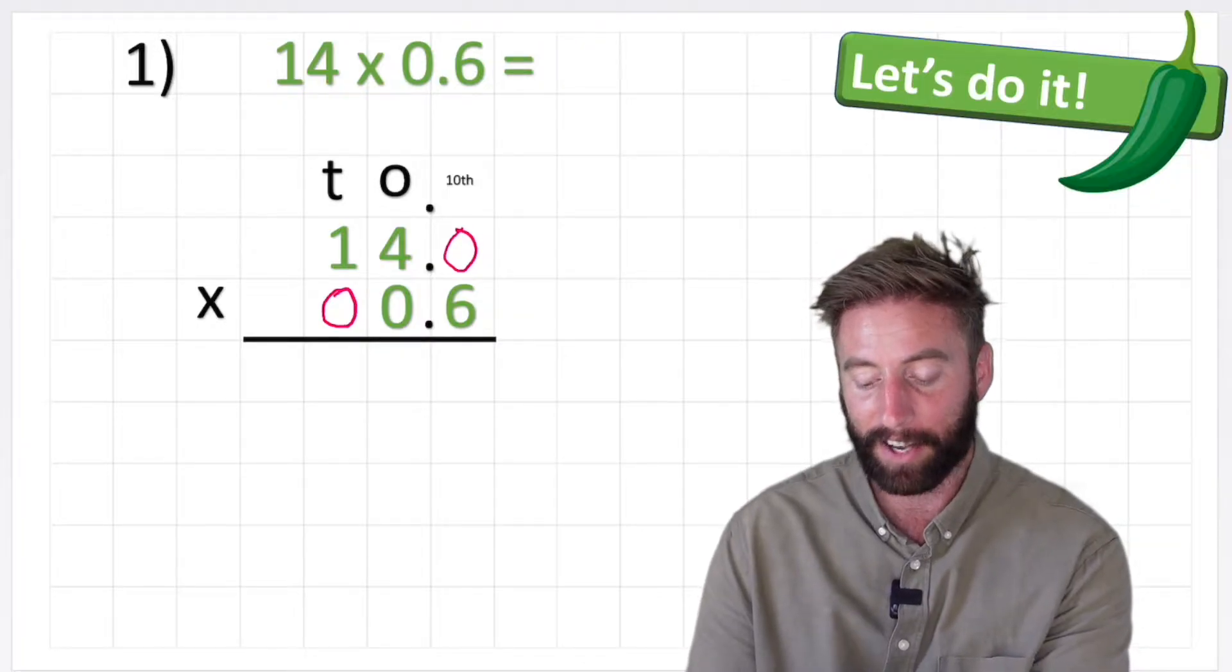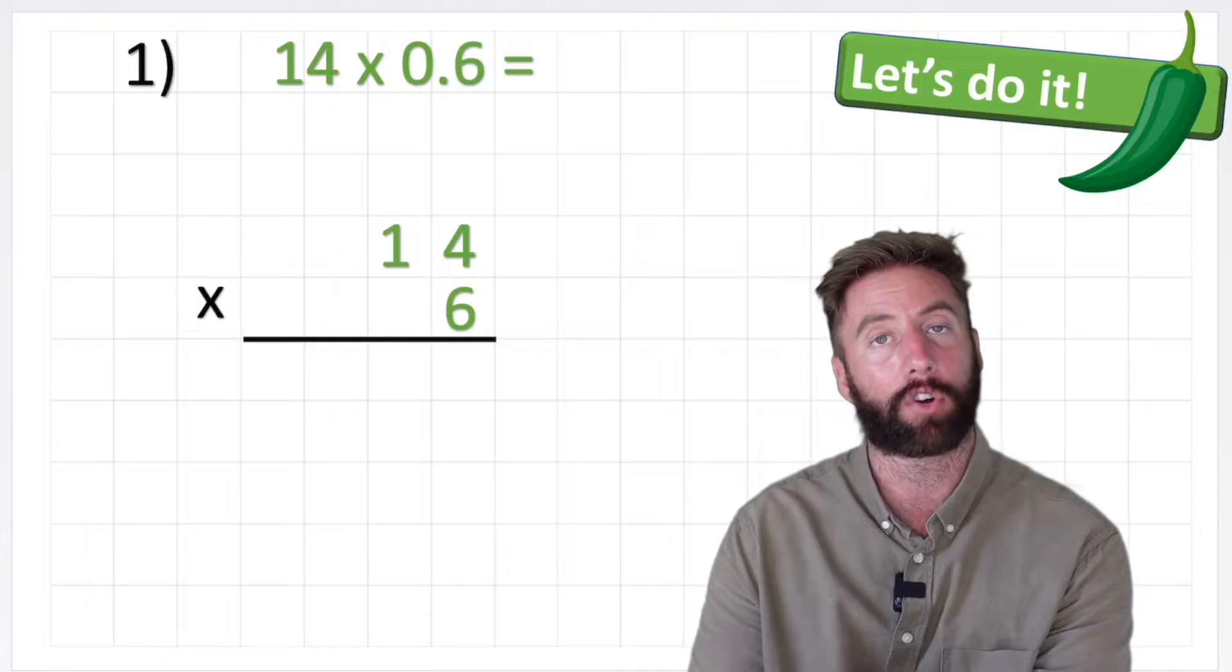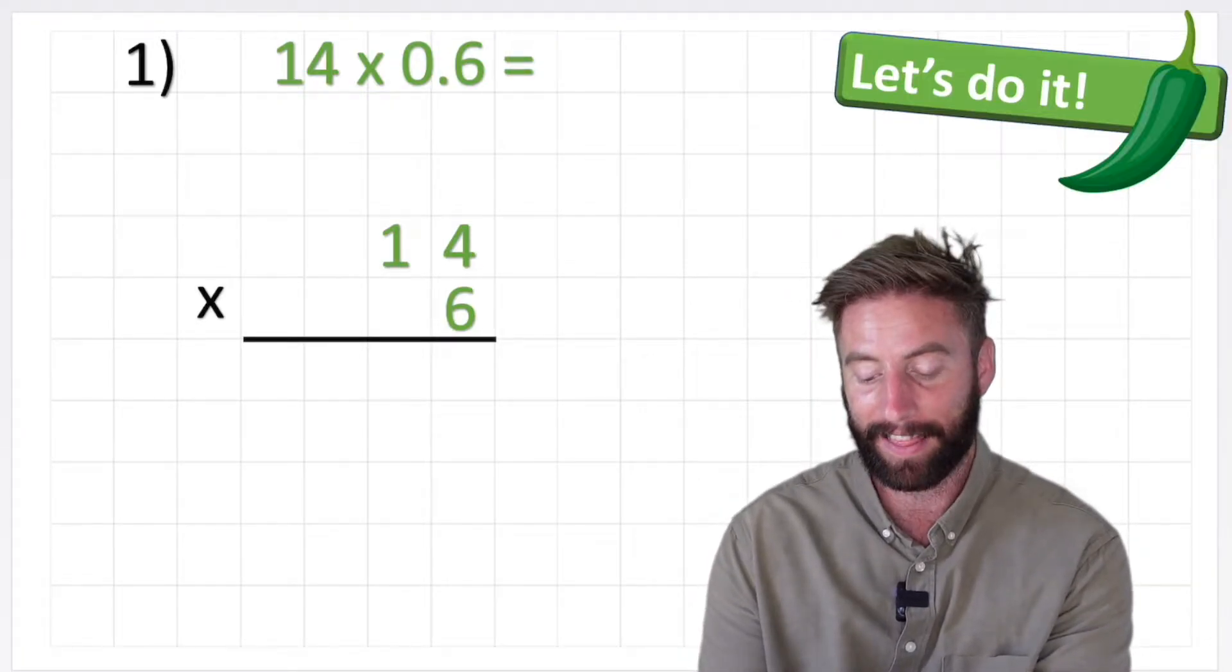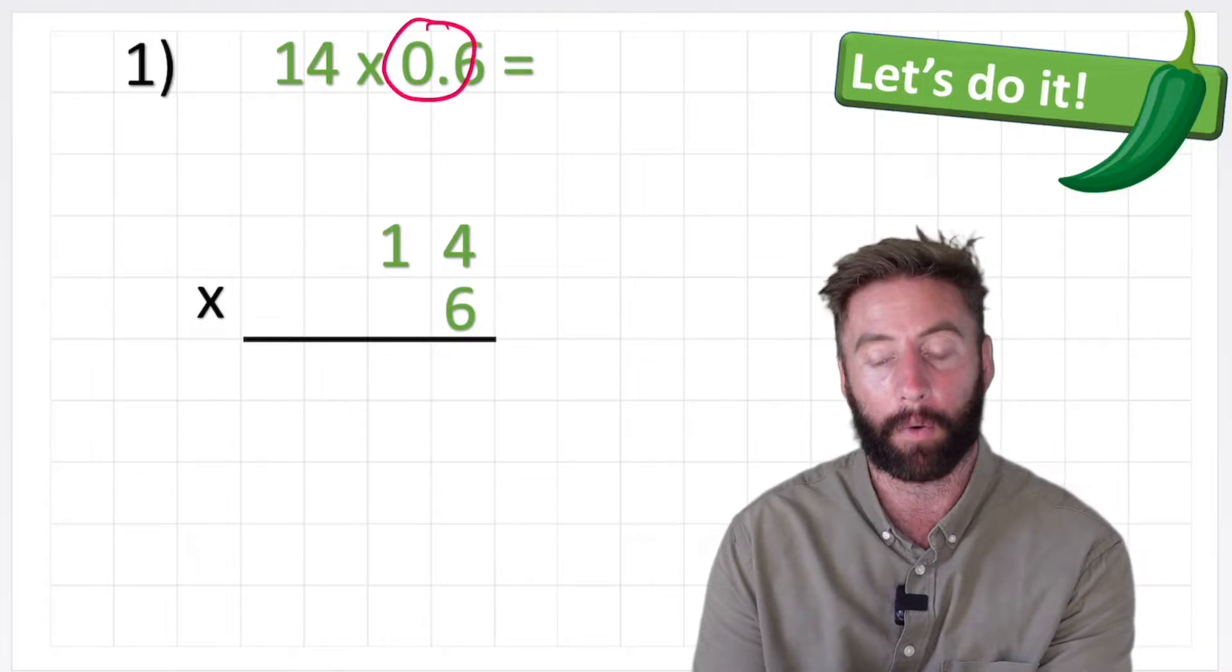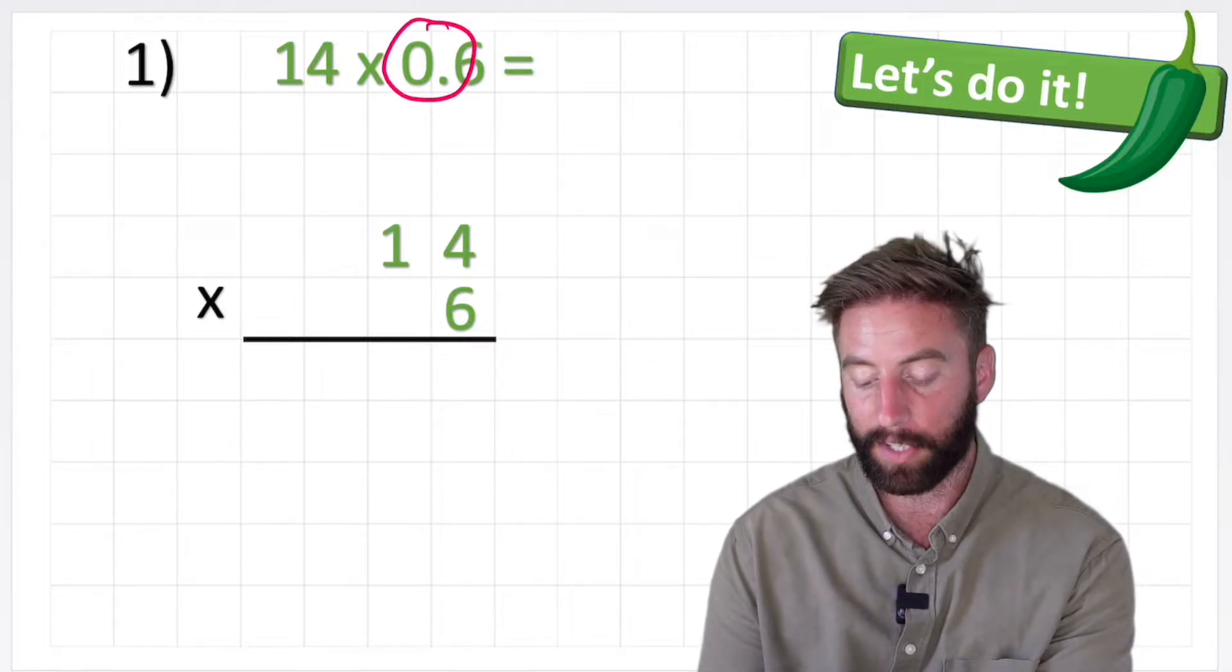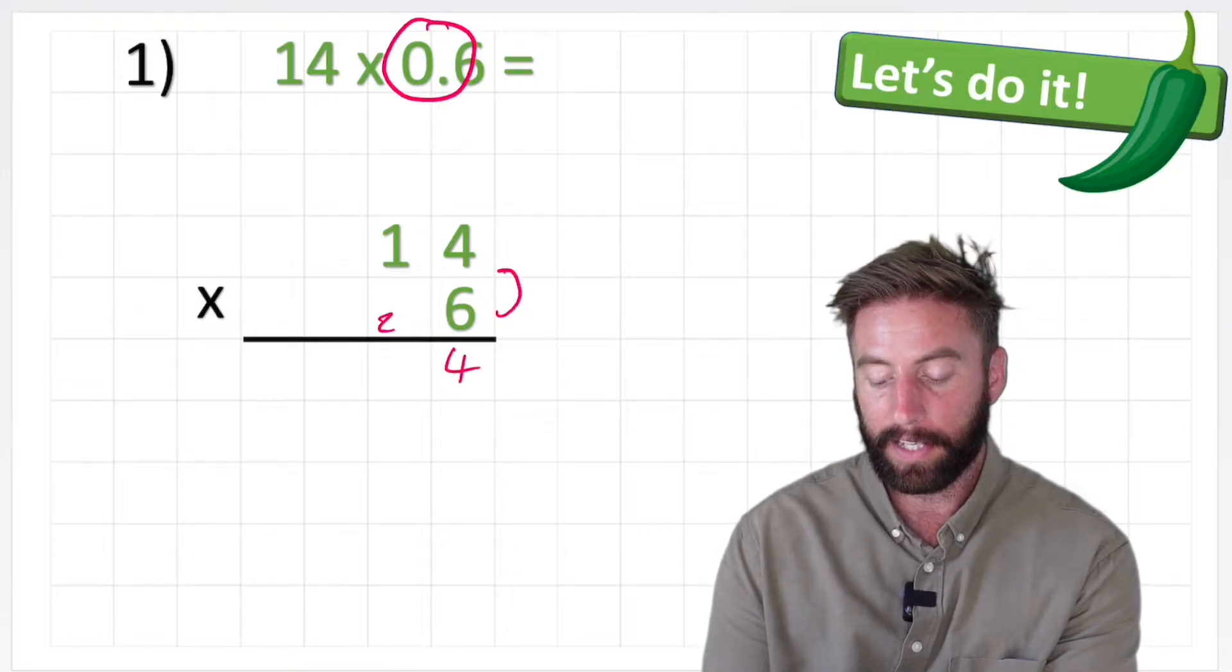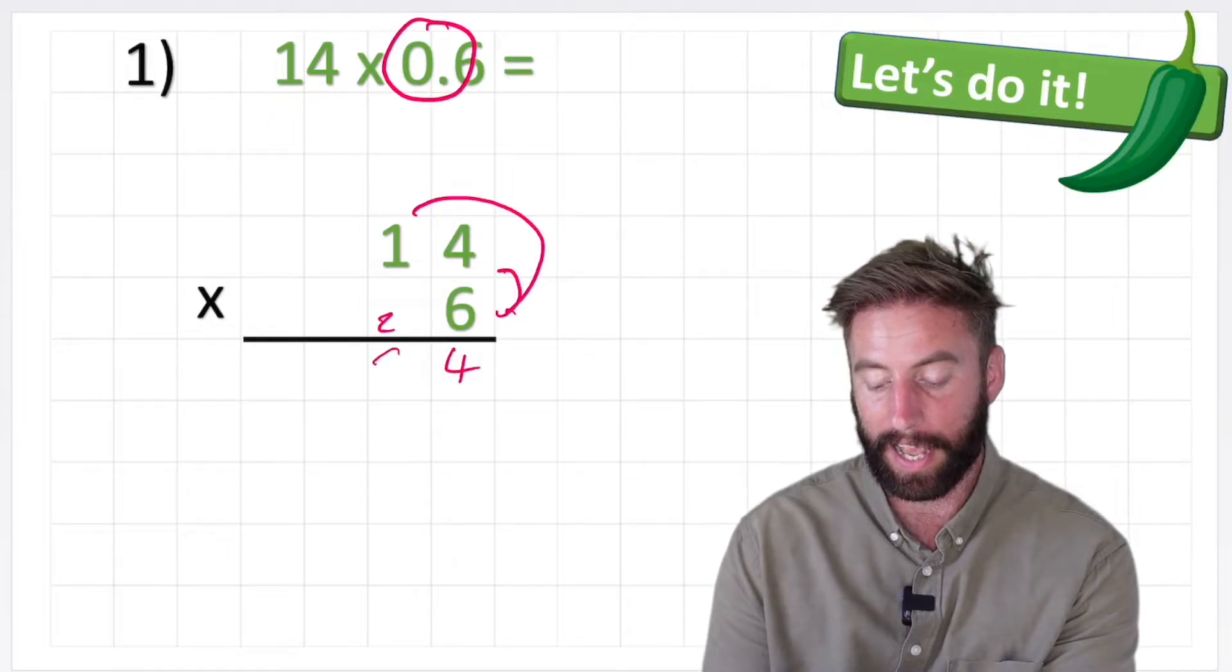So we're going to temporarily forget our decimals, so instead of looking at it like 14 times 0.6, we're going to look at it like 14 times 6. We're forgetting this decimal for now. So we can do 14 times 6 as normal: 6 times 4 is 24, 6 times 1 is 6, plus the 2 is 8.